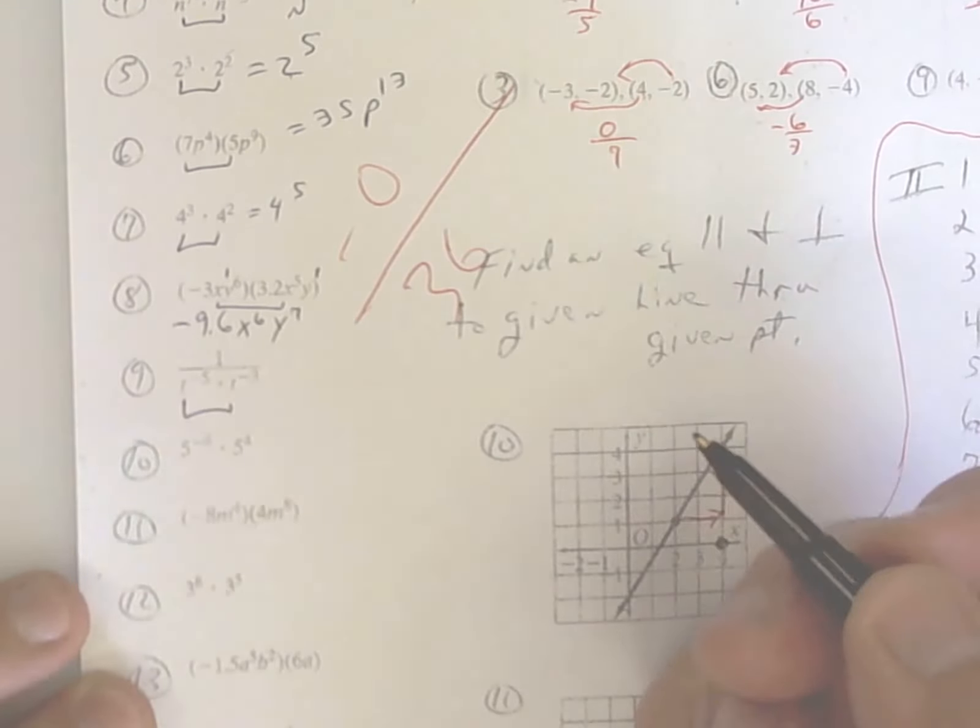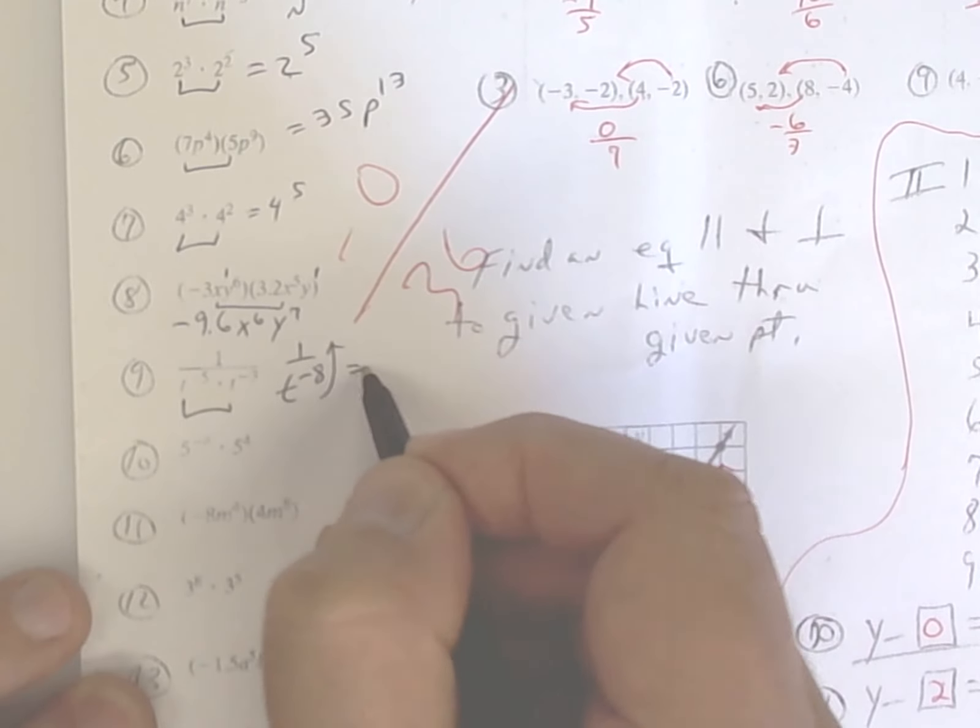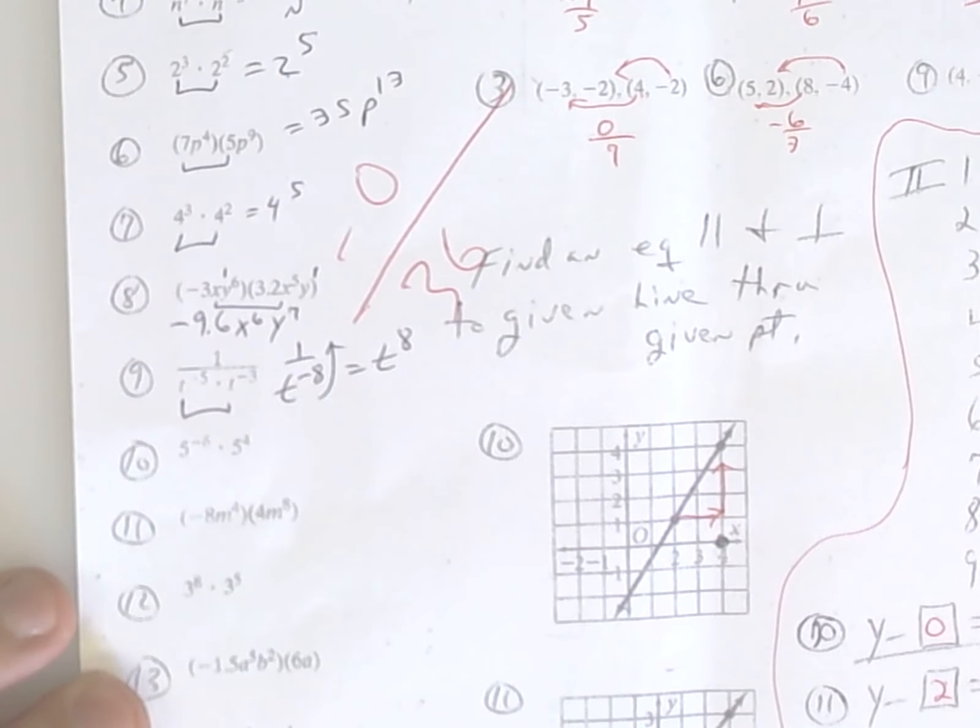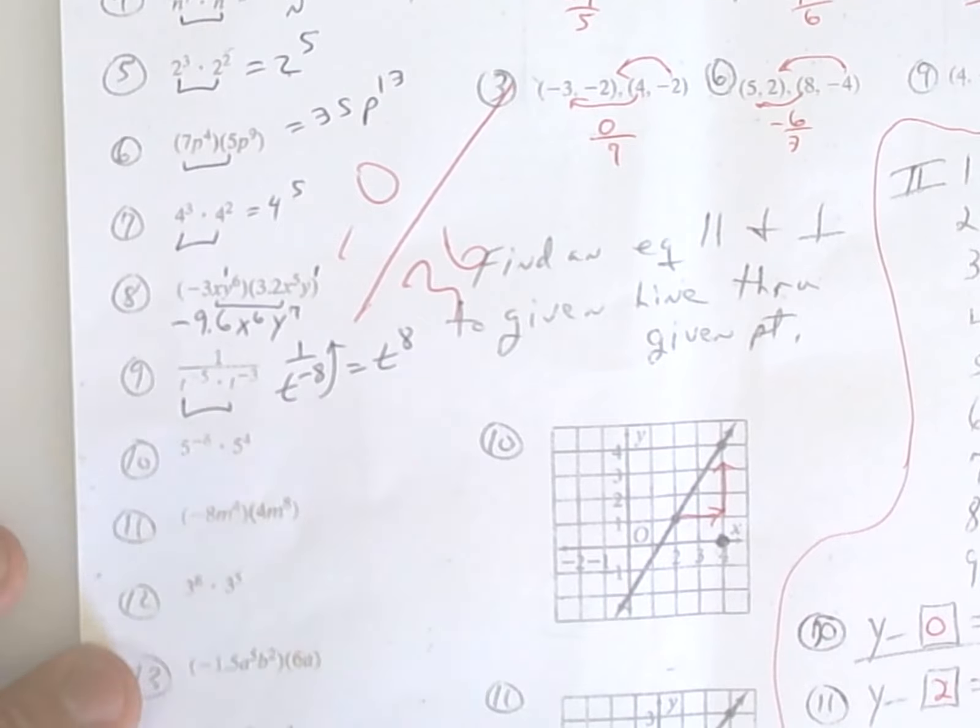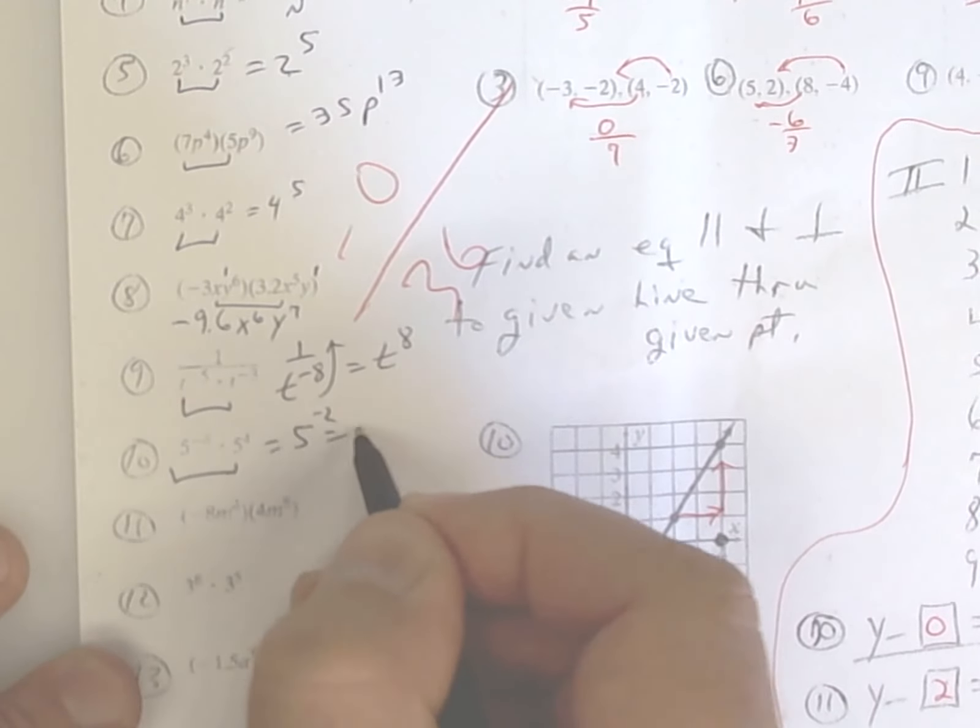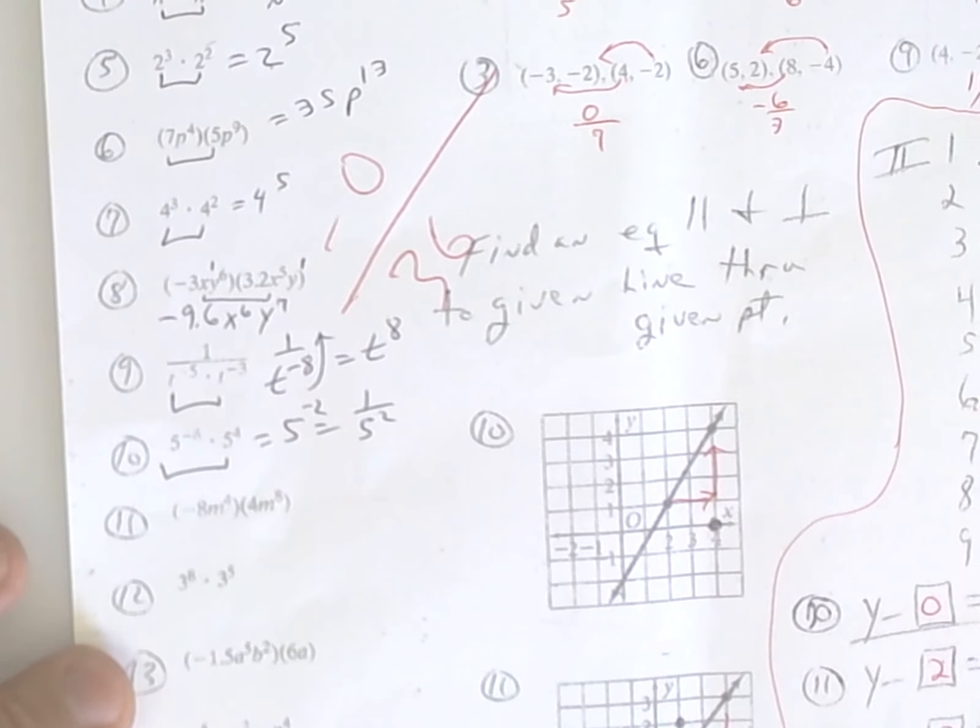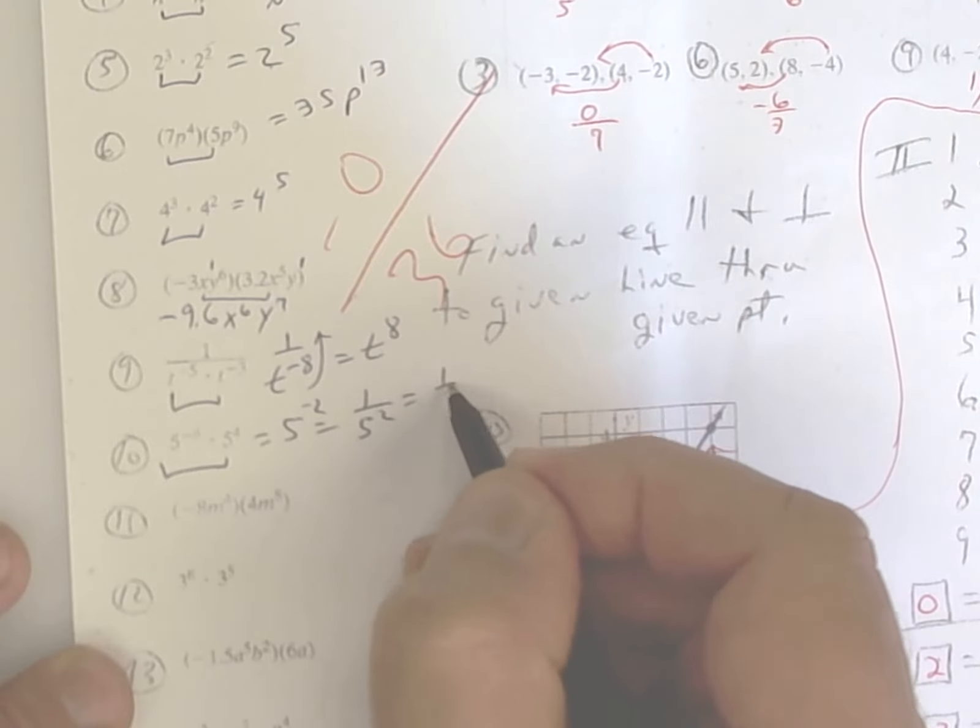Add these up. That looks like 1 over t to the negative 8. Bring it up. It becomes t to the positive 8. Remember, the exponent changes when you go up or down. Here you have the same base. You add those up. You get 5 to the negative 2 or 1 over 5 to the 2. You could put 1 over 25 if you want to.